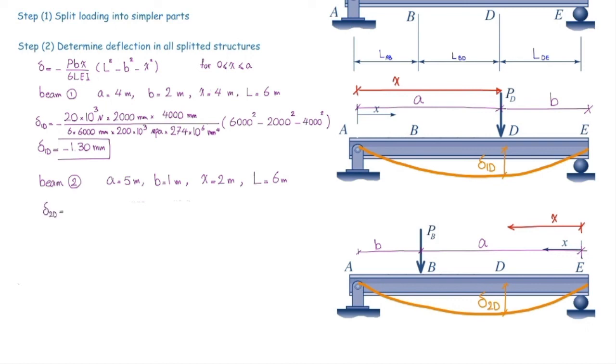All right. So I'm going to use the same equation. And I'm going to plug the values. Force in this case is PB, which is 45. Multiply that by 1000. And plug the values after conversion. And in that case, we get delta D at beam number 2 is equal to 0.629 millimeter.